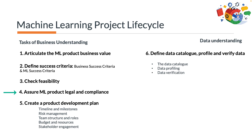The fourth task is to assure machine learning product legal and compliance. Legal and compliance constraints are essential for any business application, including machine learning applications. These constraints are frequently augmented by ethical and social considerations like transparency, fairness, and trust. The relevant requirements, such as interpretability requirements and ethical considerations, should be clearly defined and articulated at this stage to ensure the final product is compliant with regulatory policies and requirements.